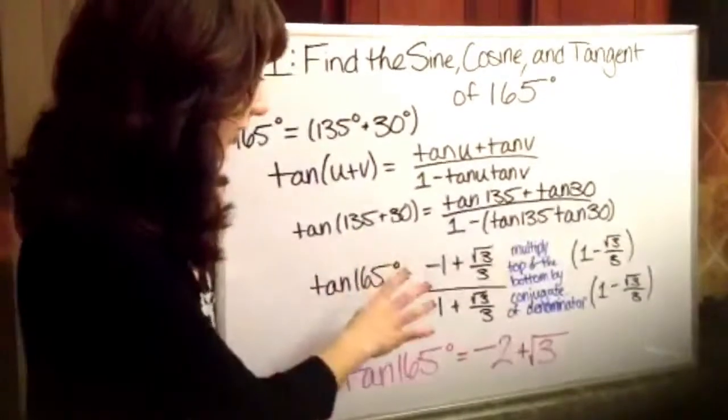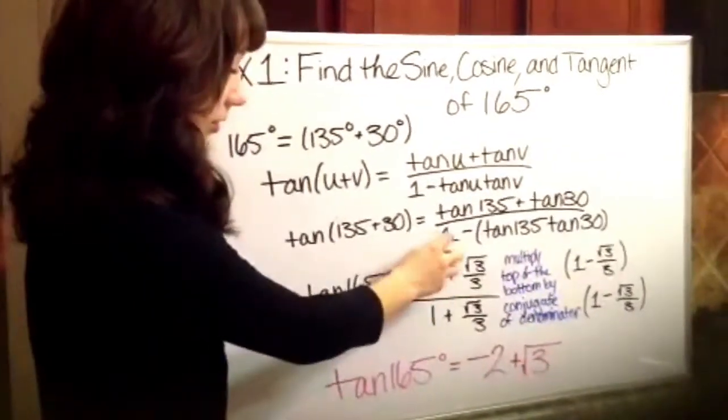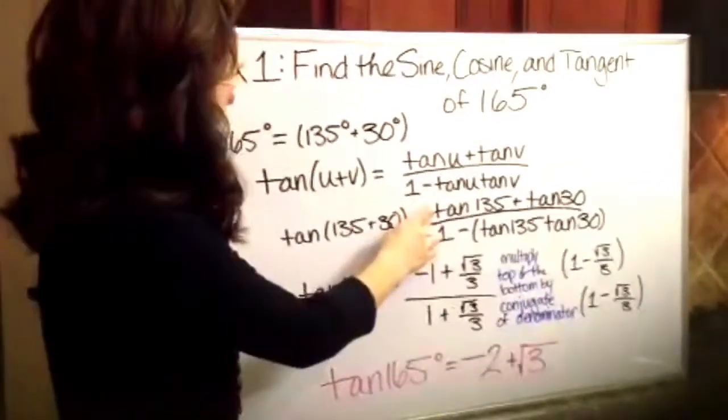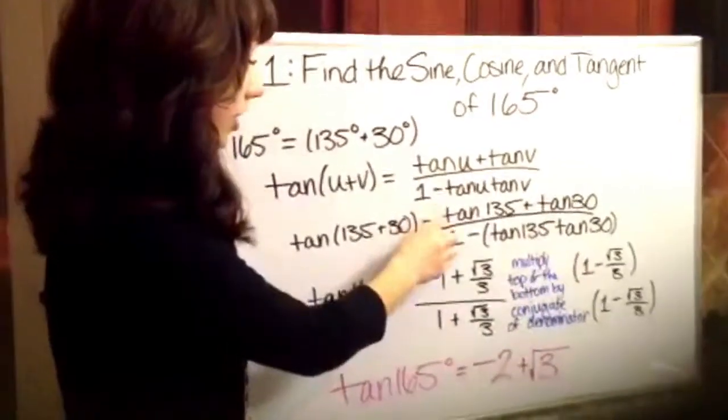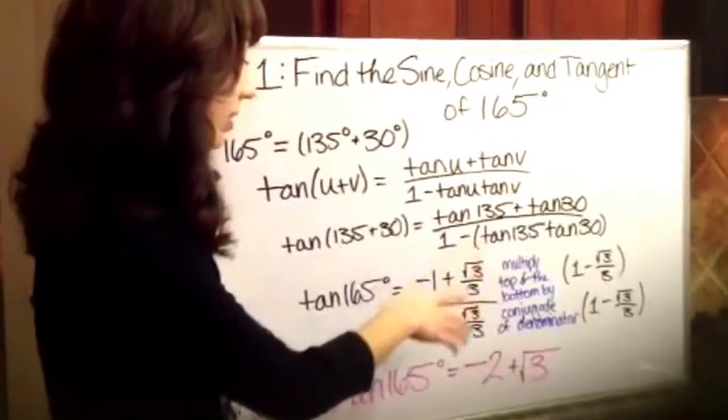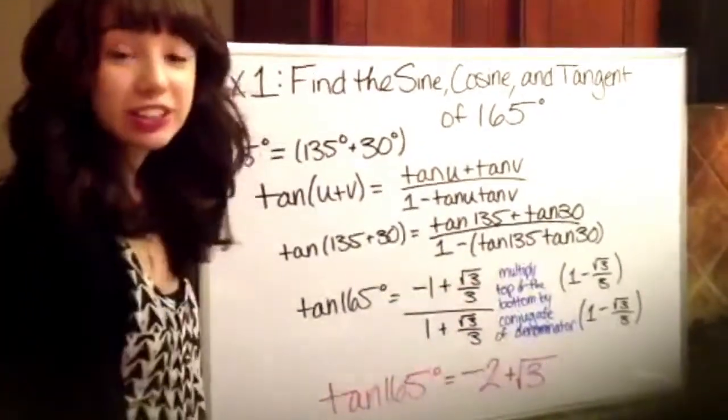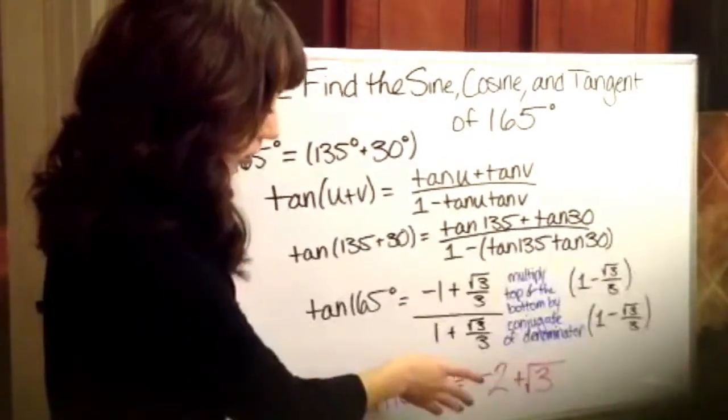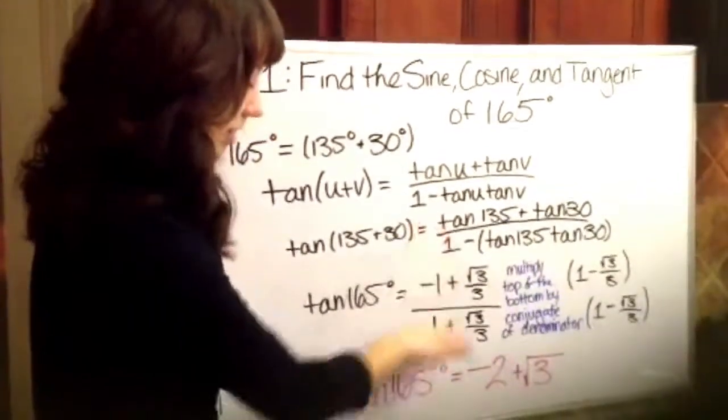So once we plug that all in, we get these tangent measurements. So you need to go to your unit circle and hopefully you have it written in, the tangent values for 135 and 30. So once you find your tangent values on your unit circle, you want to plug them in and then you end up with this crazy fraction.